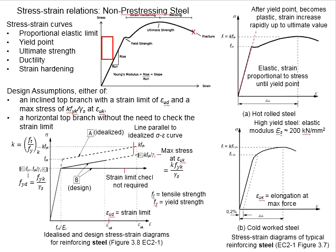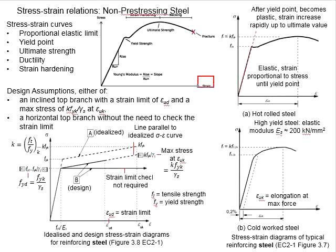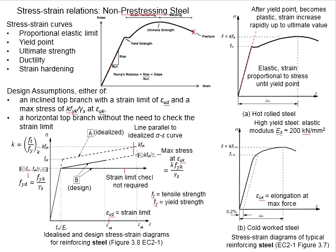During the elastic stage, the strain develops proportionally to the increase of stress, which means the elongation of the steel responding to the force applied is proportional, as presented by the straight line of the curve. The gradient of this straight line represents the modulus of elasticity, or Young's modulus.